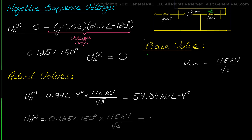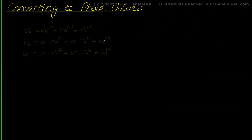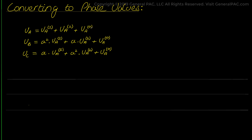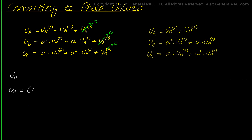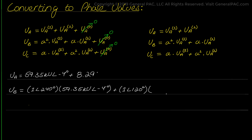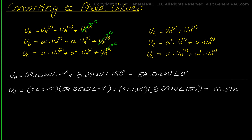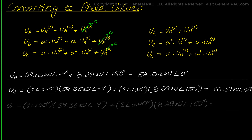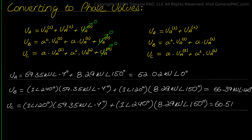The negative sequence voltage is equal to 8.3 kV at angle 150 degrees. The legacy transformation equations then transform the sequence components to actual line-to-ground phase voltages. Since the zero sequence component is non-existent, we eliminate it directly from our equations. Plugging in the calculated sequence component values, we finally have the actual phase-to-ground voltages: V-A equals 52 kV at angle 0 degrees, V-B equals 66.3 kV at angle 120 degrees, and V-C equals 60.5 kV at angle 108 degrees.